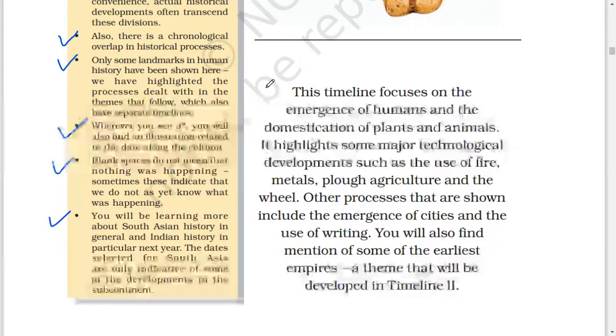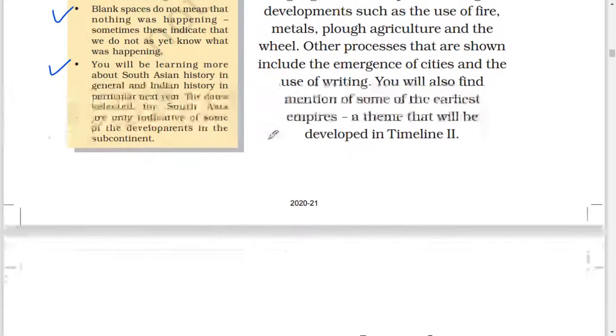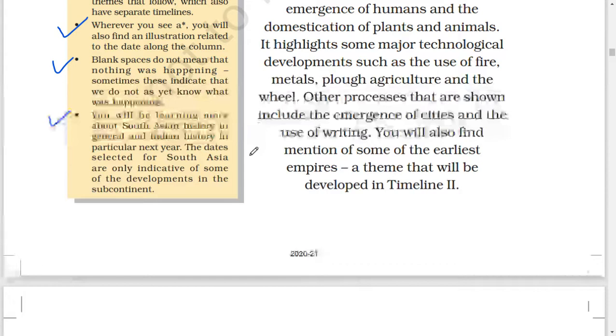This timeline focuses on the emergence of humans and the domestication of plants and animals. It highlights some major technological developments such as the use of fire, metals, plough agriculture, and the wheel. Other processes that are shown include the emergence of cities and the use of writing. You will also find mention of some of the earliest empires, a theme that will be developed in Timeline 2.